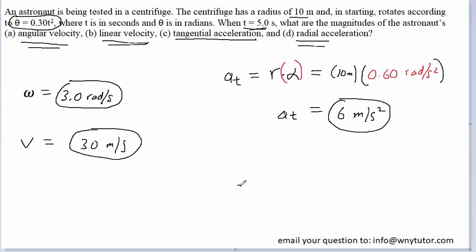Finally, the radial acceleration, which we can denote as a_r, is going to equal the radius times the angular velocity squared.